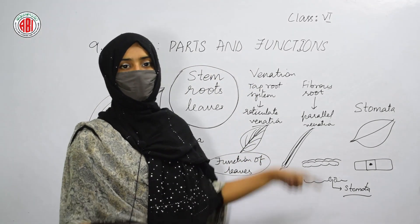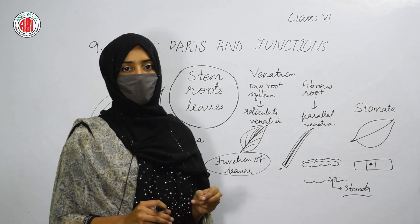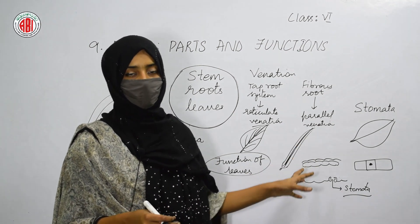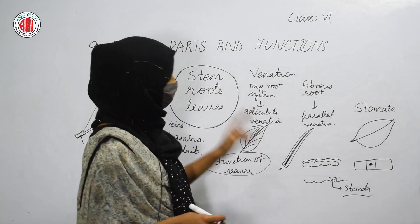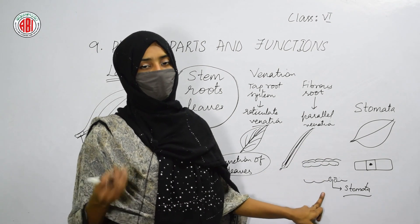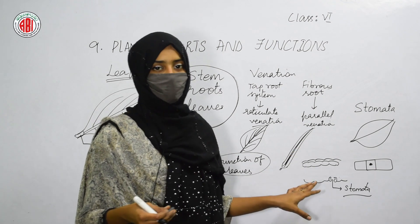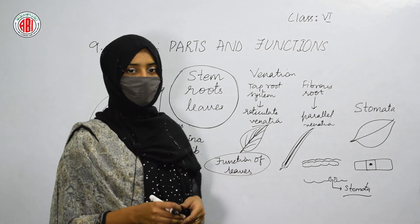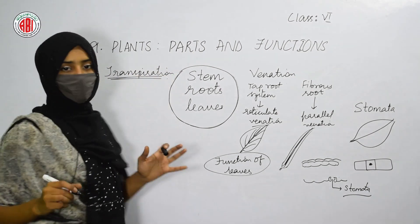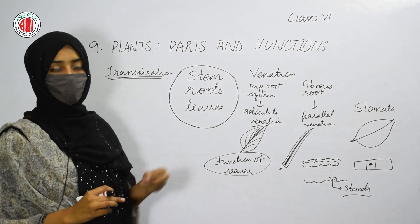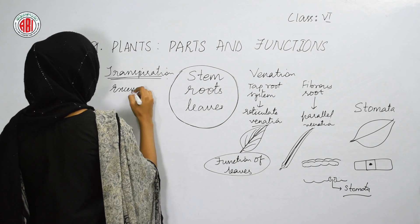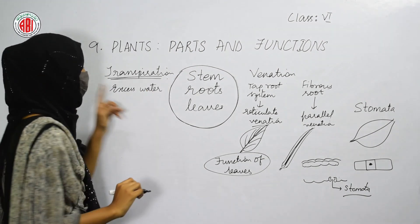The function of stomata is the exchange of gases. Gases present in the atmosphere can enter the leaf through the stomata, and gases inside the leaf can move out through these pores. The stomata help in the process of respiration. They also help in the process of transpiration — the process through which excess water moves out of the plant through the stomata present in the leaf.